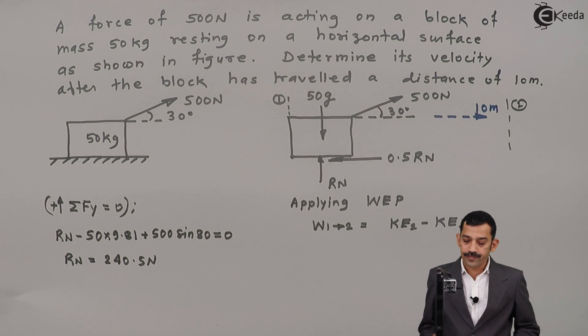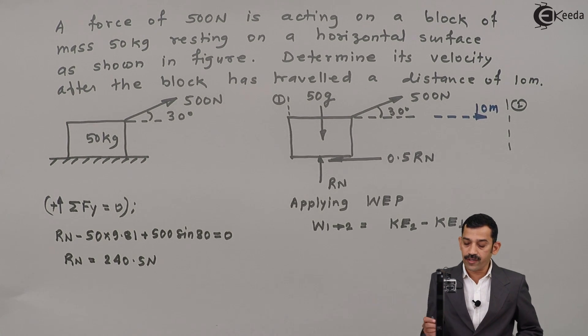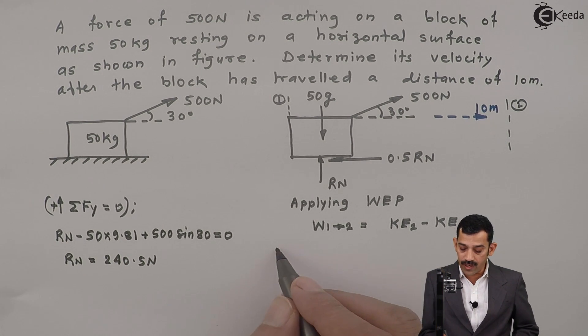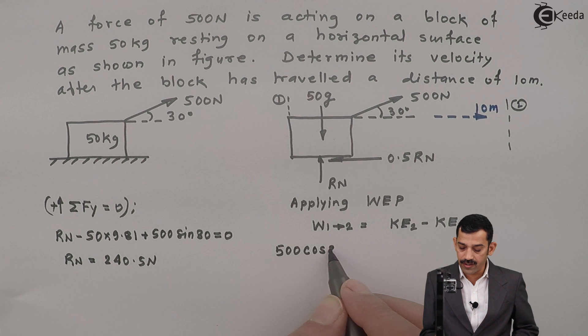Now in work done by forces, which forces act in the direction of motion? First one, 500 cos of 30 acts in rightward direction. Motion is also in rightward direction. Therefore work done by 500 cos 30 is positive. Therefore 500 cos 30 into 10 meters, minus frictional force work.